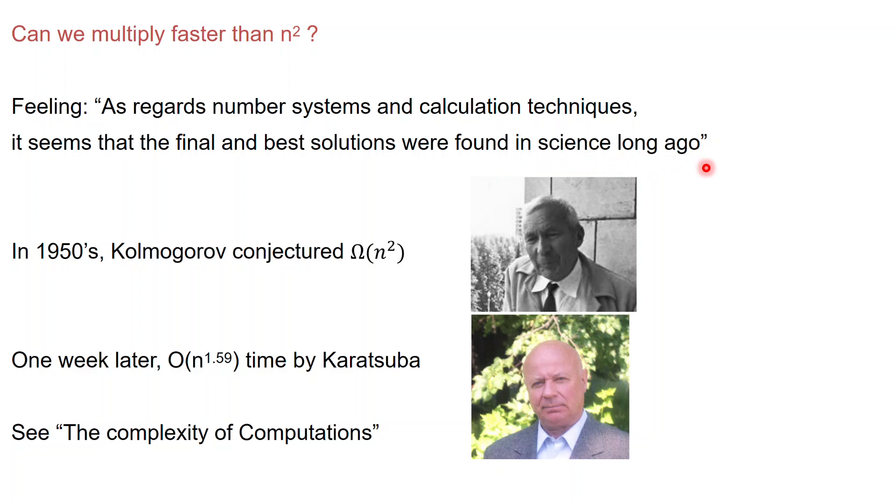And this was the feeling around 1950s. In particular, in the 1950s, Kolmogorov, a brilliant mathematician, conjectured that Omega of n squared is a lower bound on the running time for multiplication. So you cannot multiply faster than n square. And basically, one week later that this conjecture was posed, Karatsuba found a much faster algorithm running in time n to the 1.59.